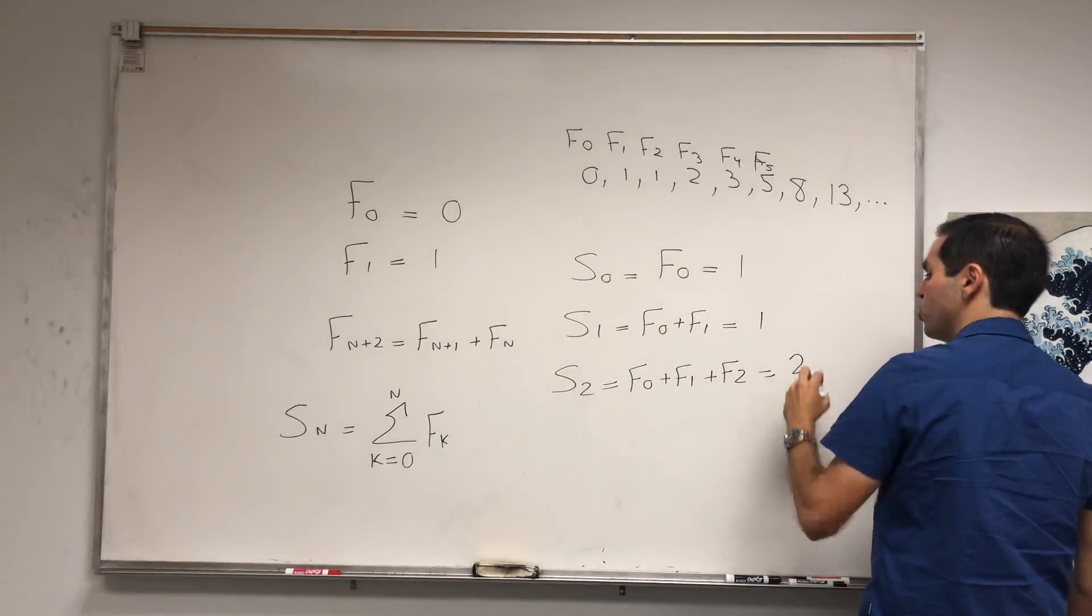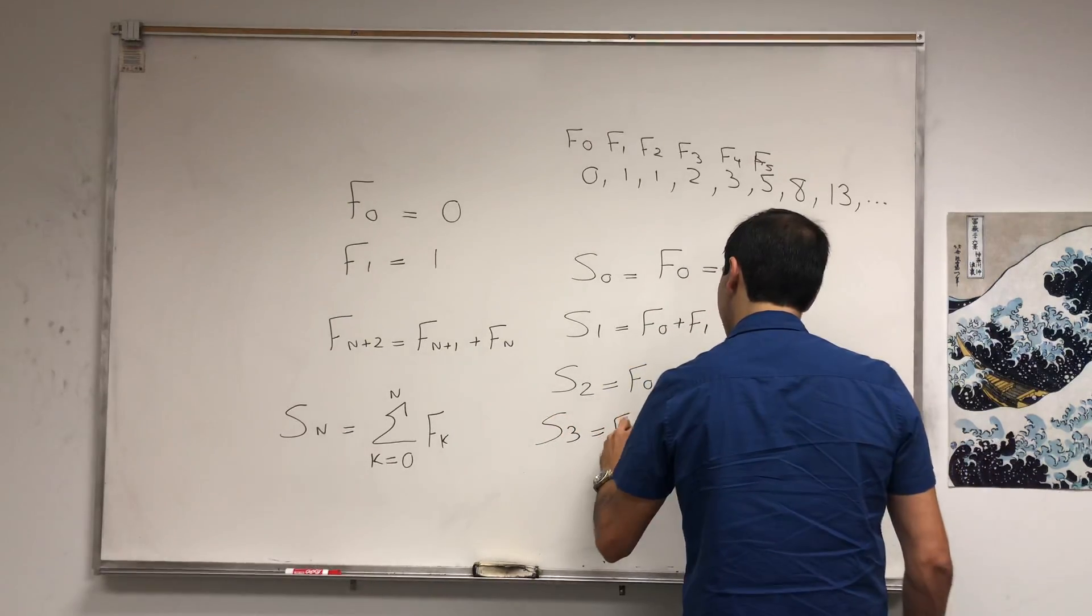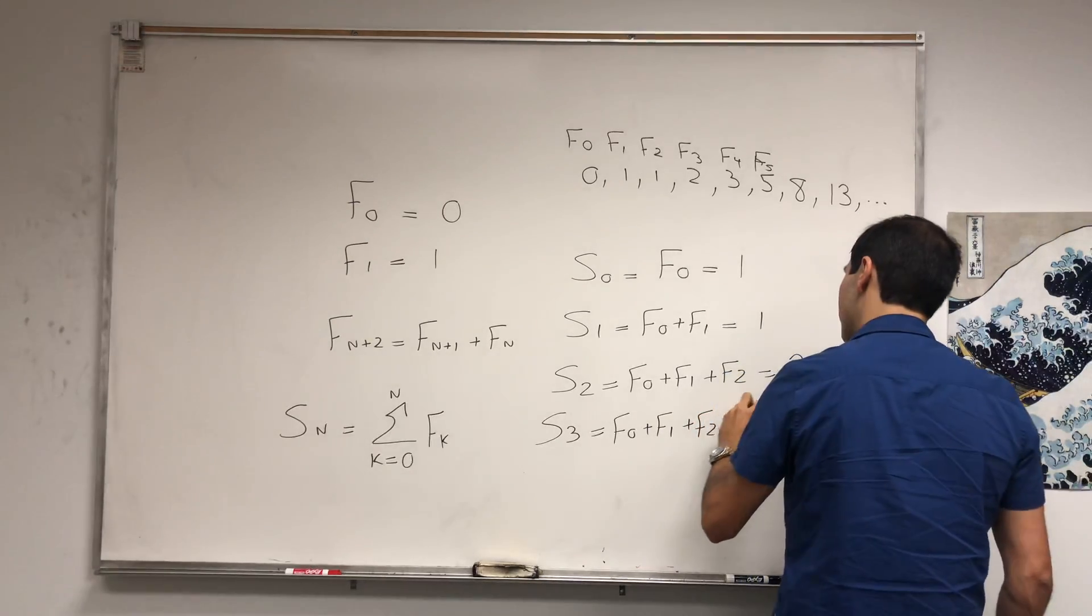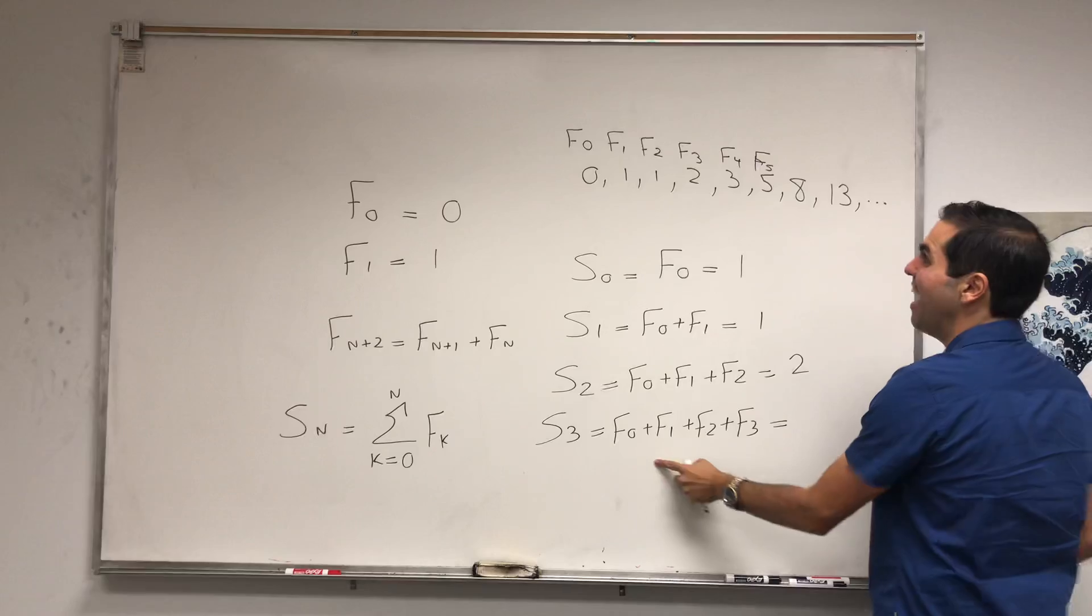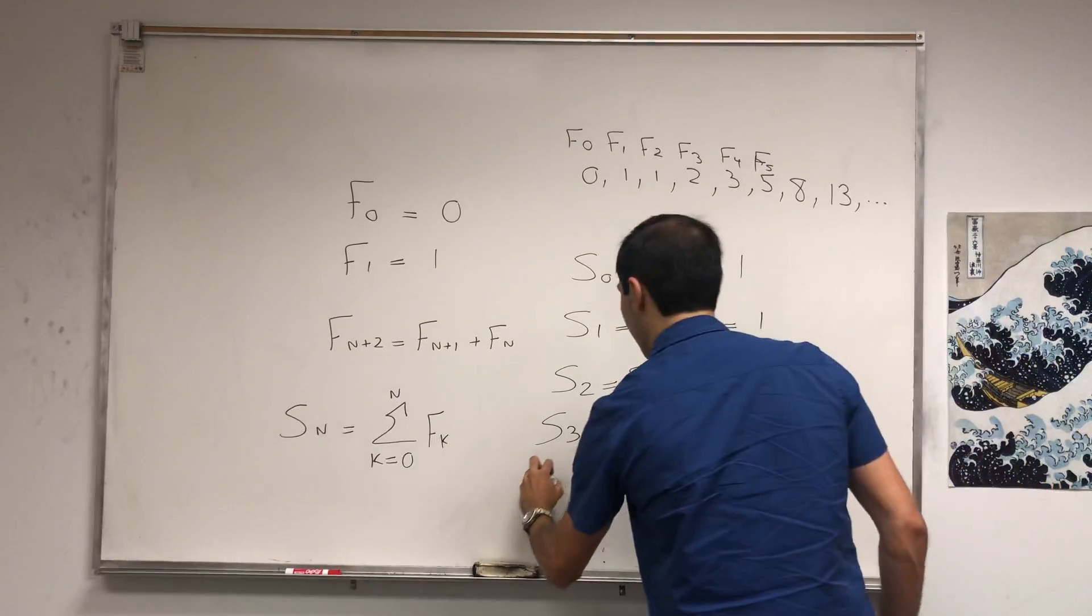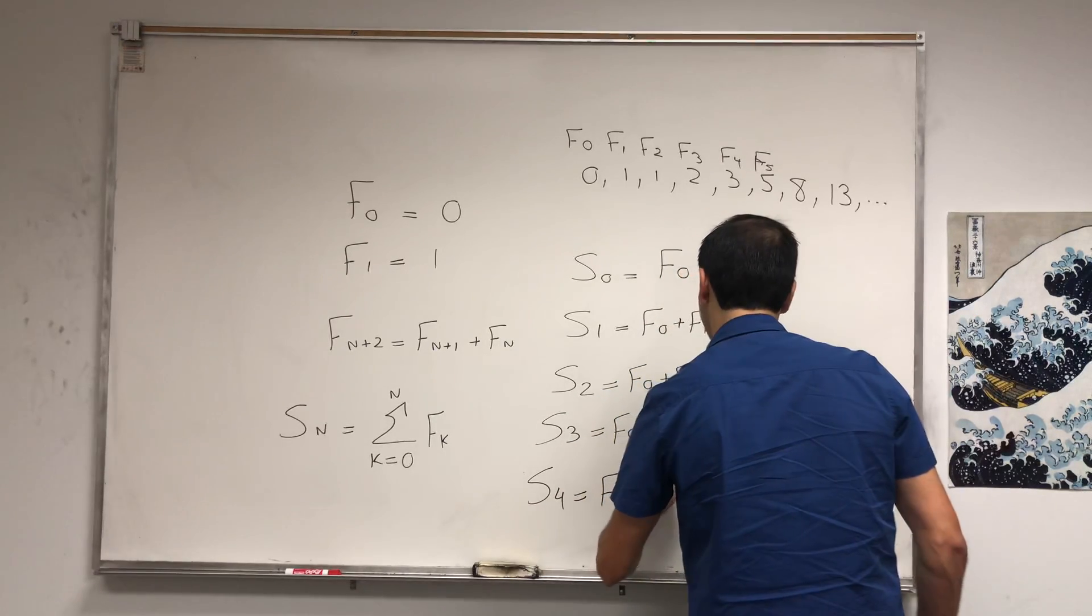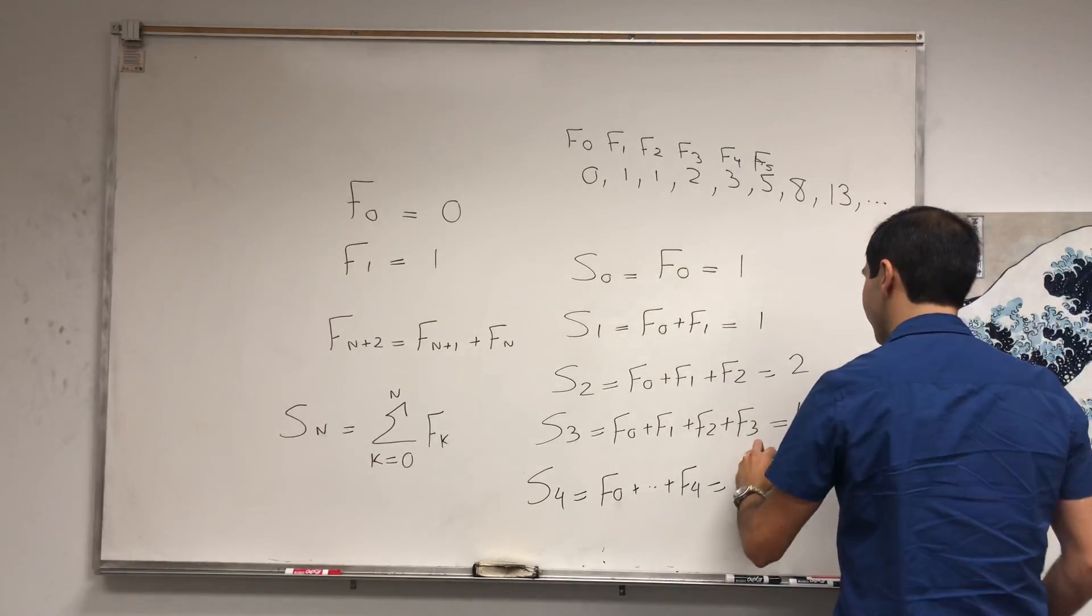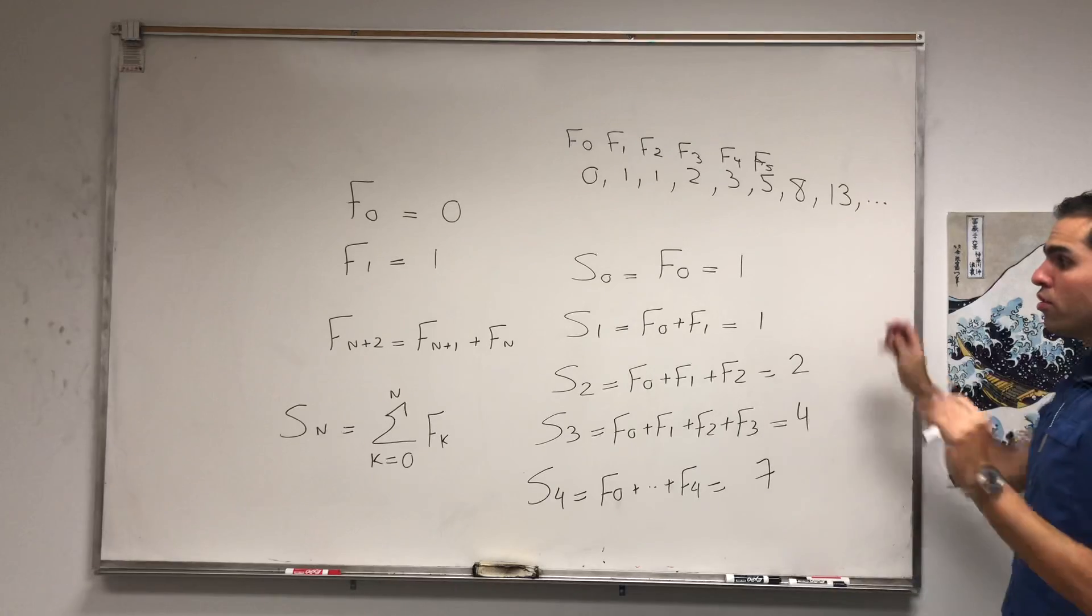Then S3, that is F0 plus F1 plus F2 plus F3, and if you sum those up you get 4. Then S4, it's the same thing up to F4, so you get 4 plus 3, which is 7. The question is, how are those numbers related?